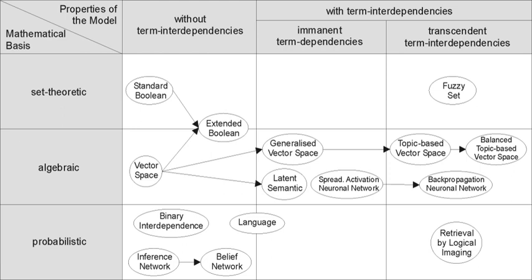Set-theoretic models represent documents as sets of words or phrases. Similarities are usually derived from set-theoretic operations on those sets. Common models are the standard boolean model, extended boolean model, and fuzzy retrieval. Algebraic models represent documents and queries usually as vectors, matrices, or tuples. The similarity of the query vector and document vector is represented as a scalar value. These include the Vector Space Model, Generalized Vector Space Model, Enhanced Topic-based Vector Space Model, Extended Boolean Model, and Latent Semantic Indexing (a.k.a. latent semantic analysis).